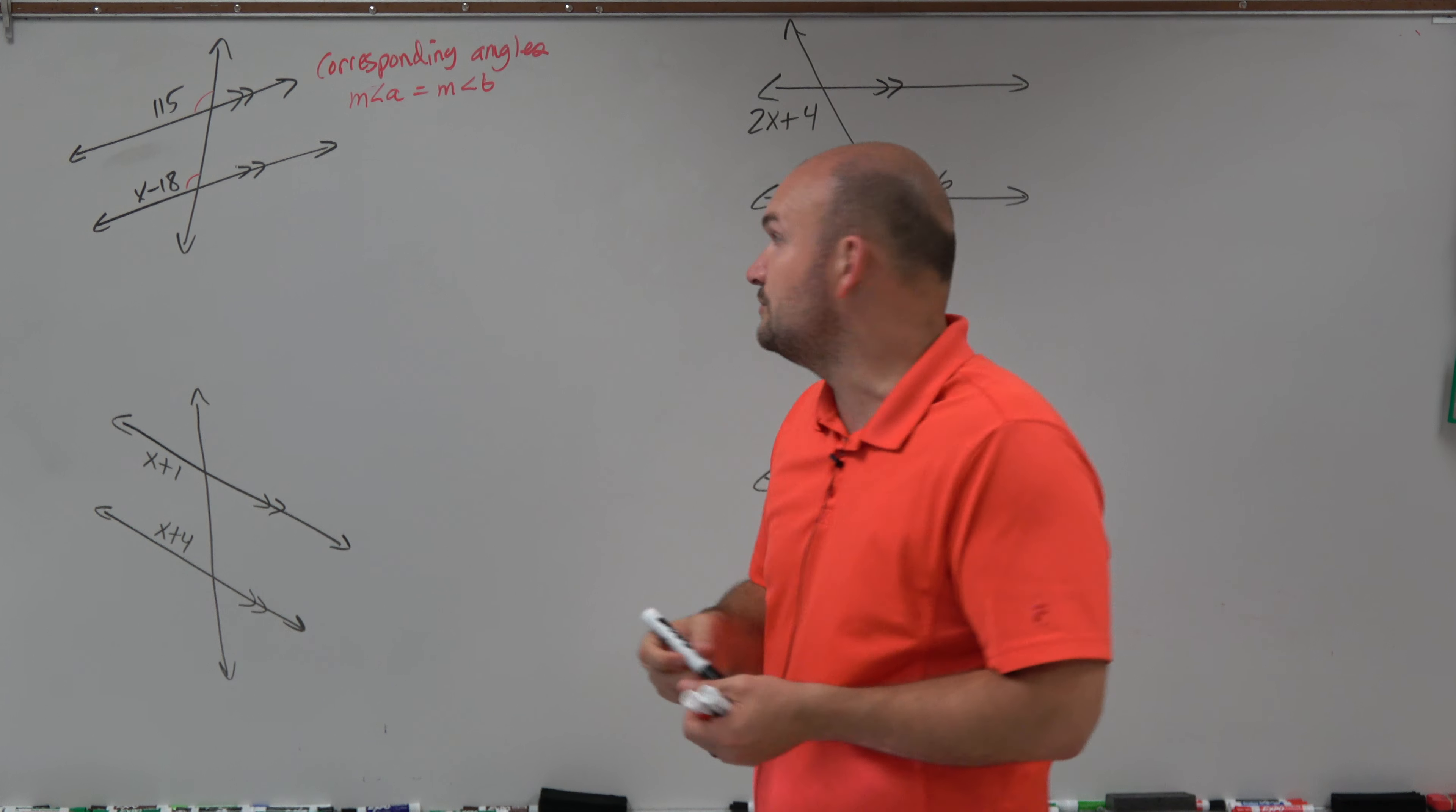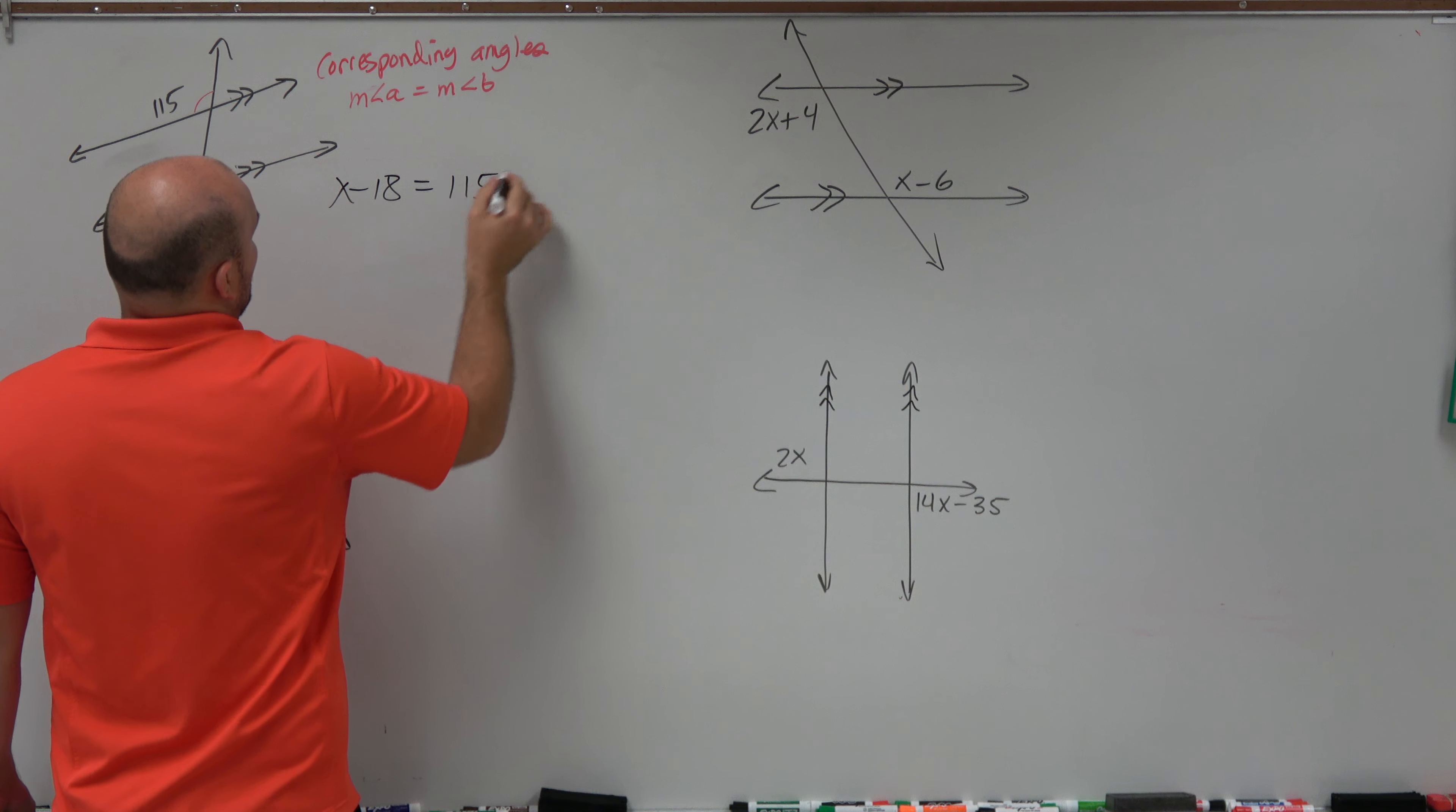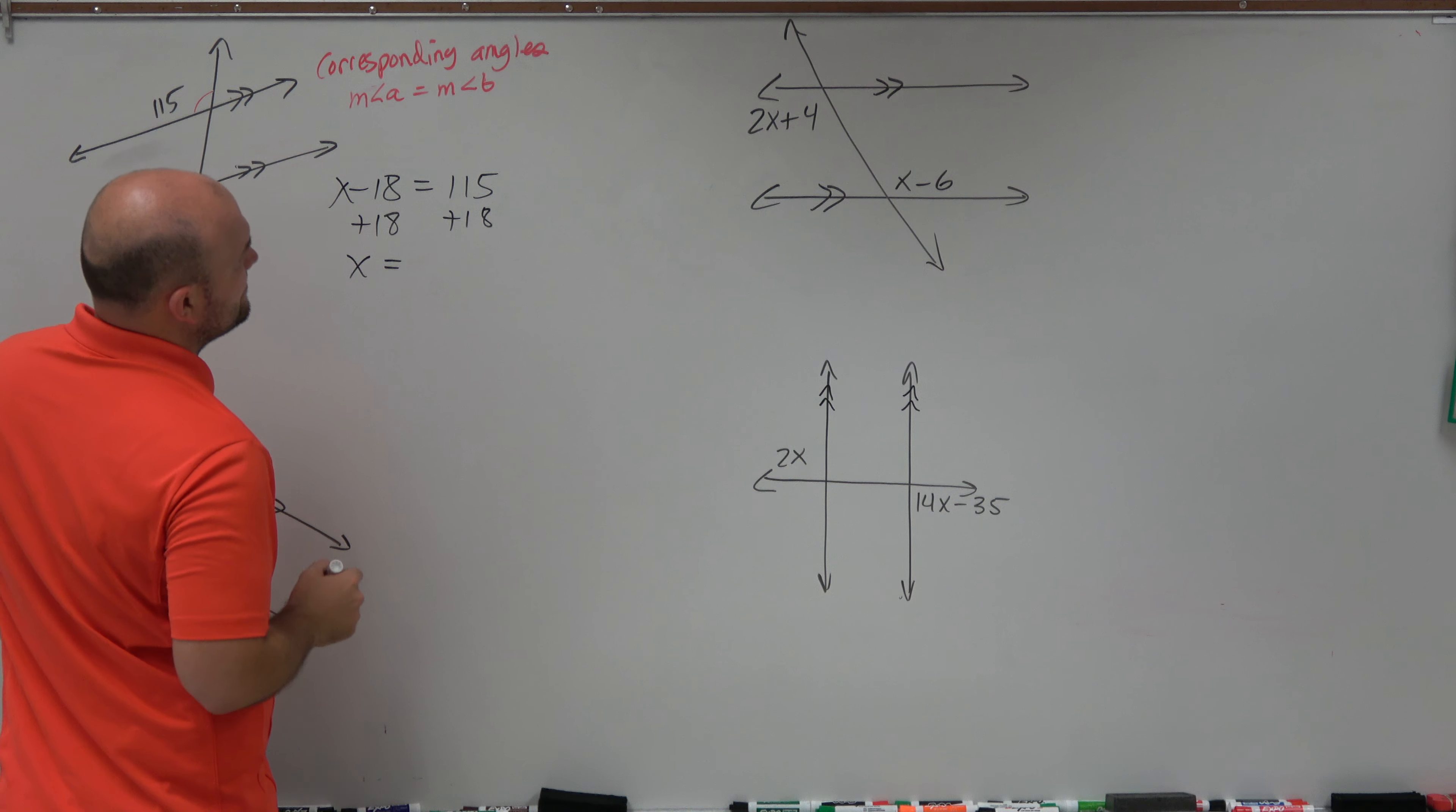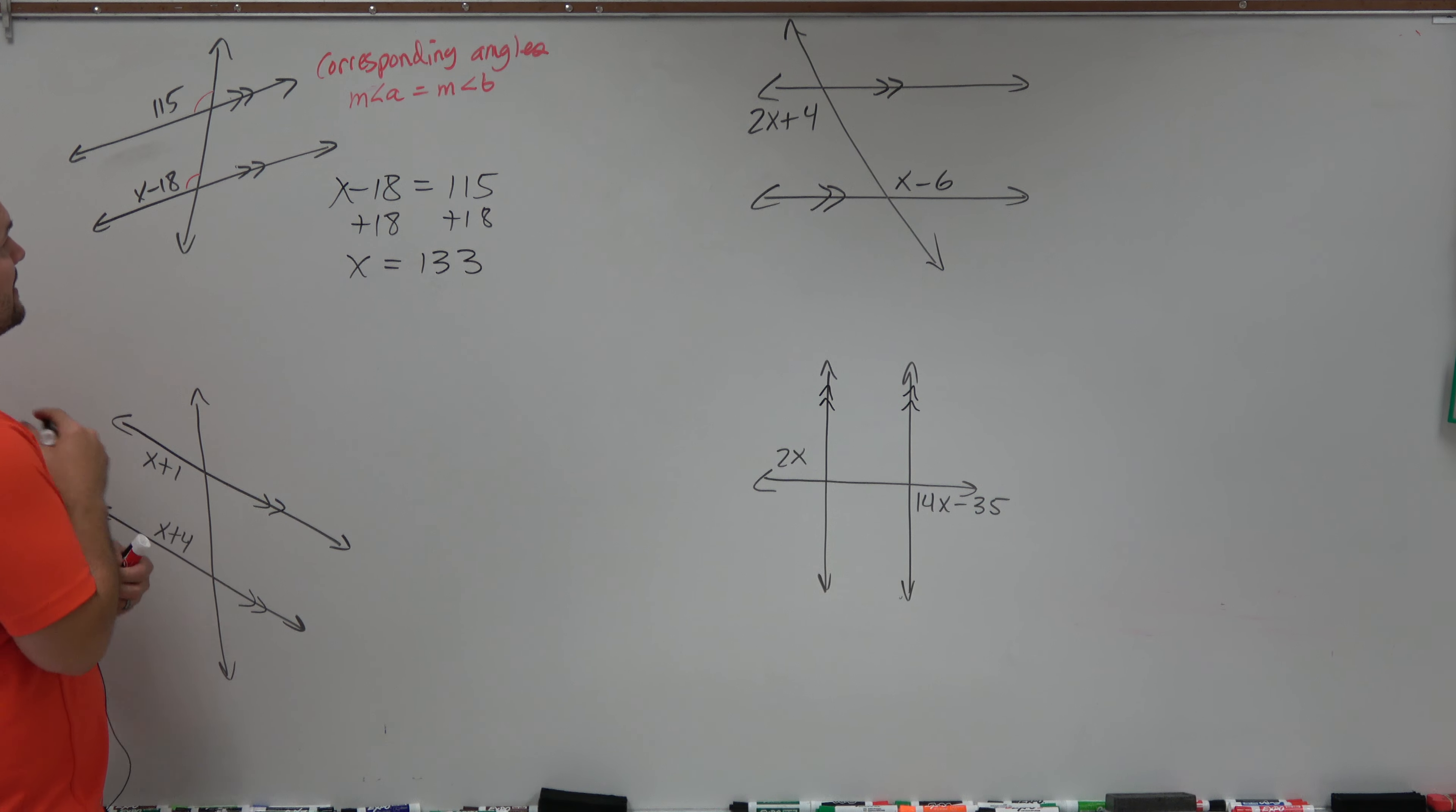But you can see for this whole video, all my two lines are parallel. So all I need to do to solve is just set up an equation. X minus 18 is equal to 115. Add 18 to both sides. X is going to equal 133.